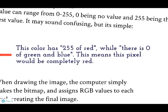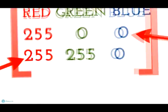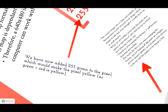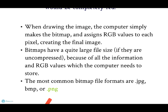There's 255 of red while there is 0 of green and blue, which means that the pixel will be completely red. In the second pixel, we have now added 255 green to the pixel, which would make the pixel yellow as green plus red is yellow. When drawing the image, the computer simply makes the bitmap and assigns RGB values to each pixel creating the final image. Bitmaps have quite a large file size if they are uncompressed because of all the information that RGB values require the computer to store. The most common bitmap file formats are .jpg, .bmp or .png.